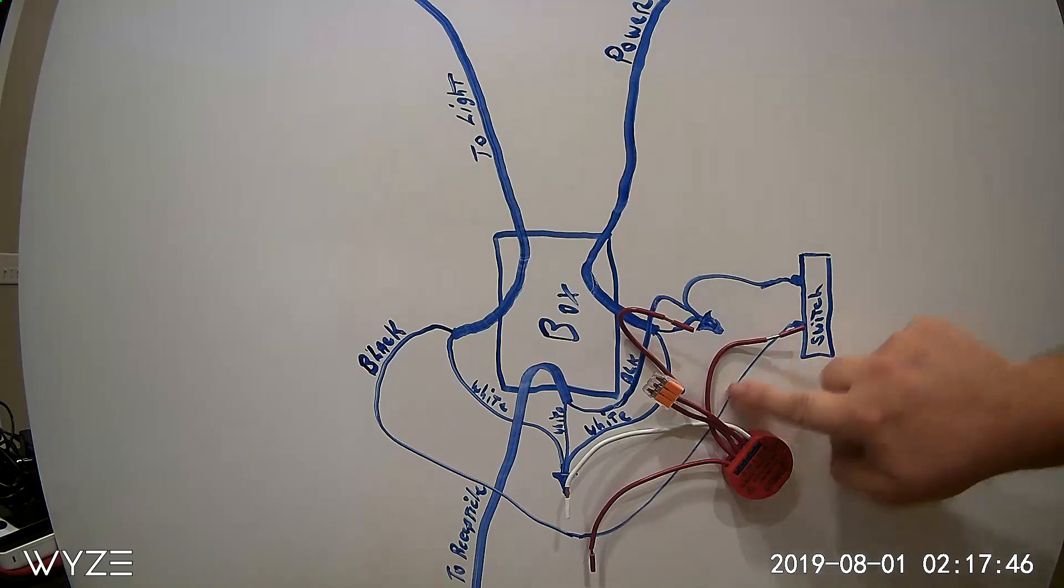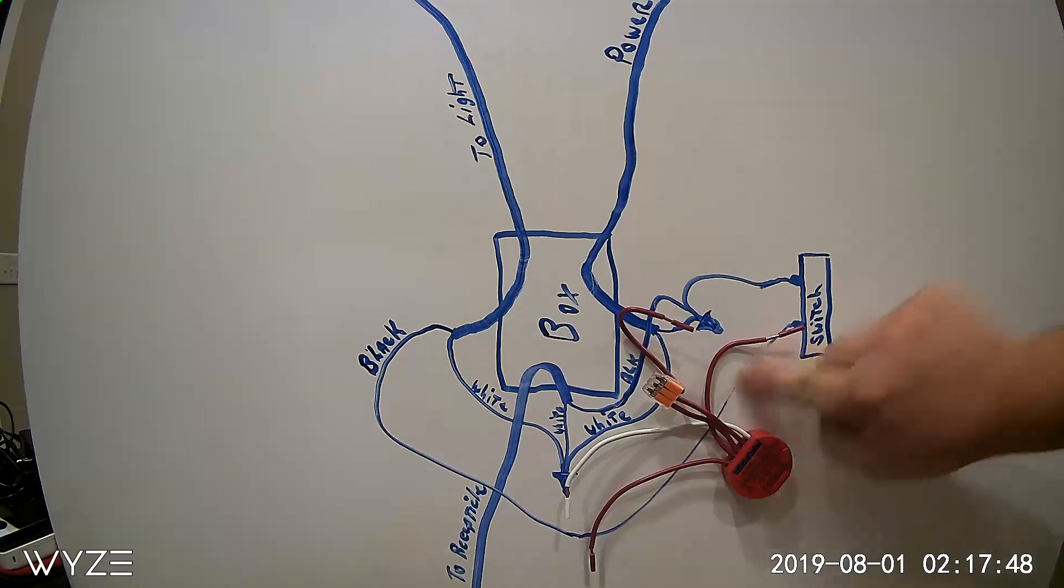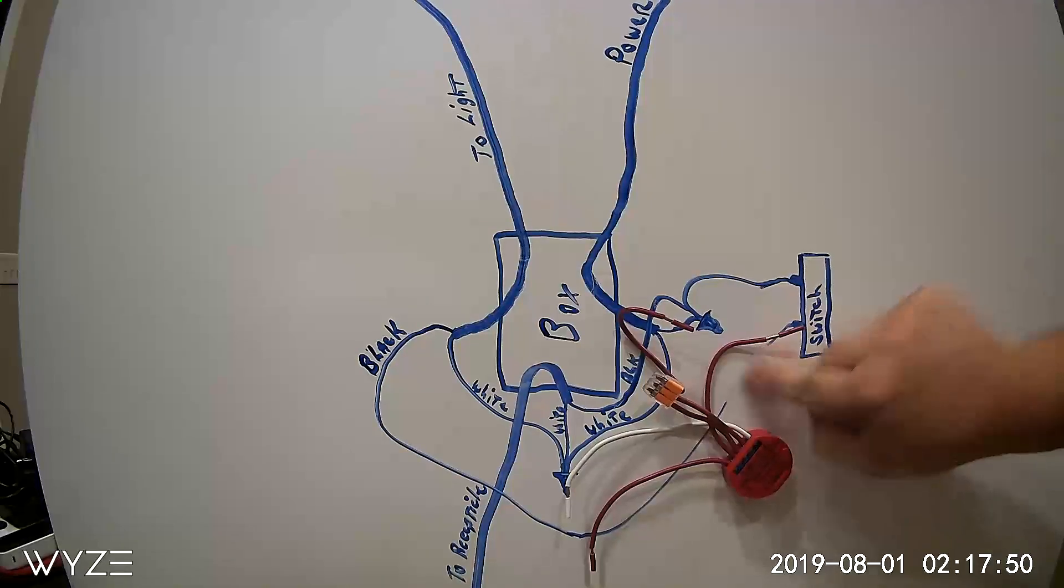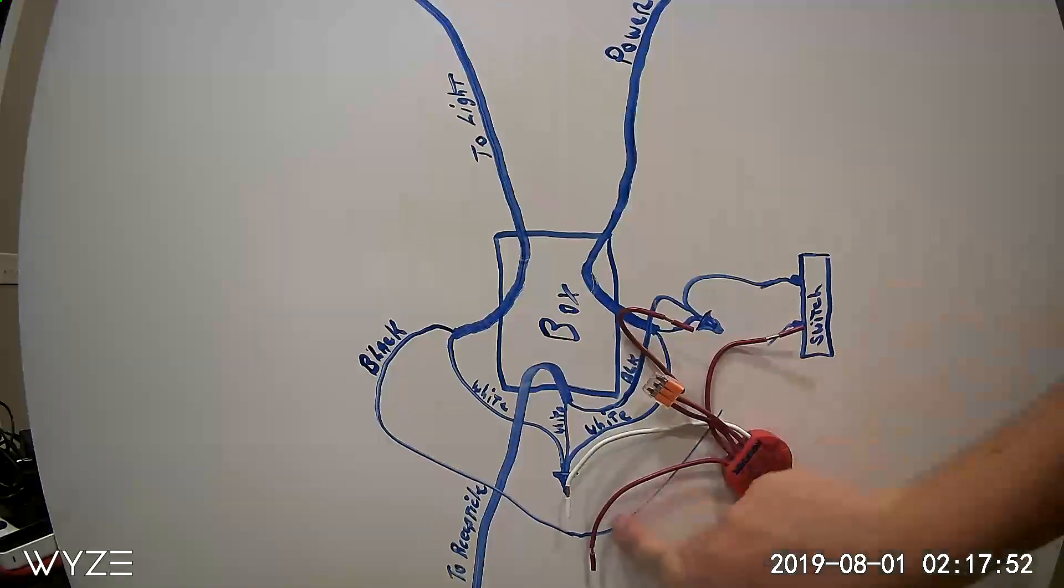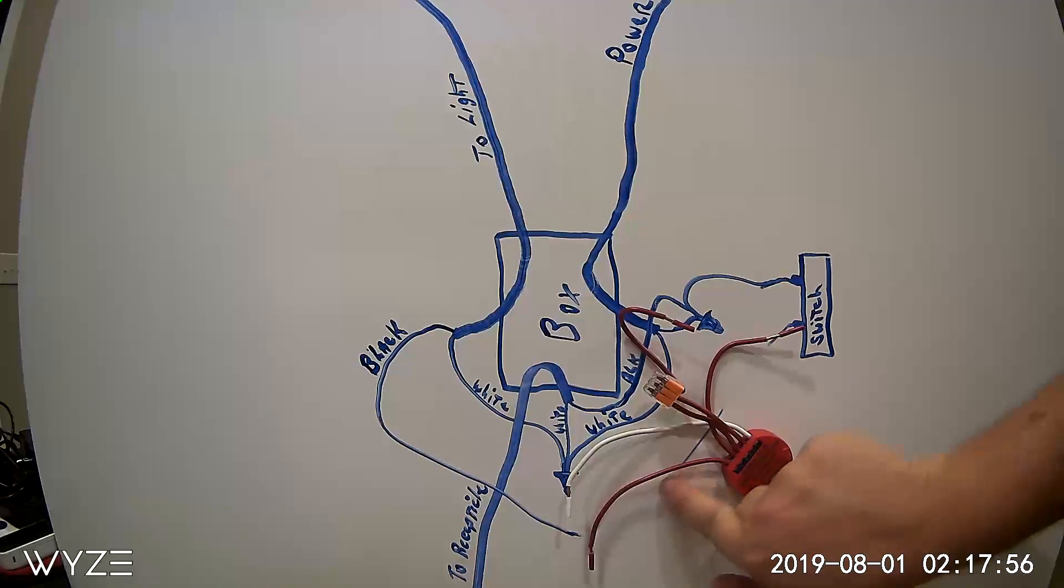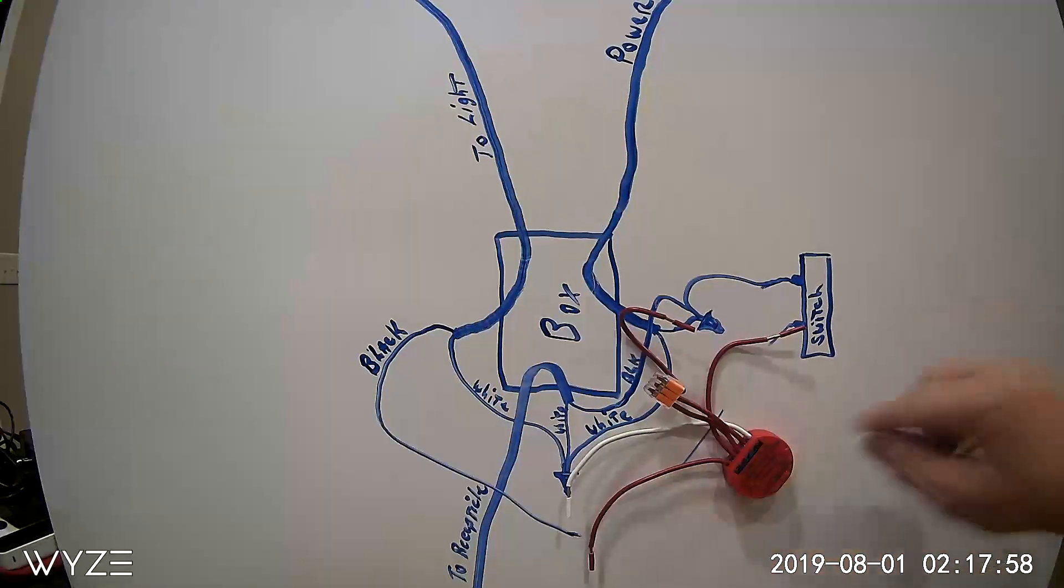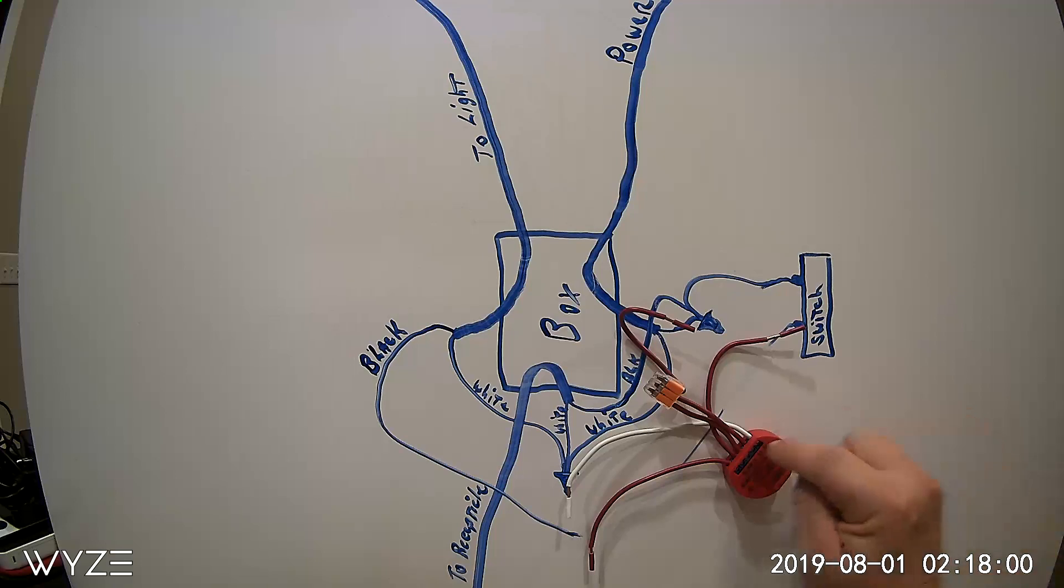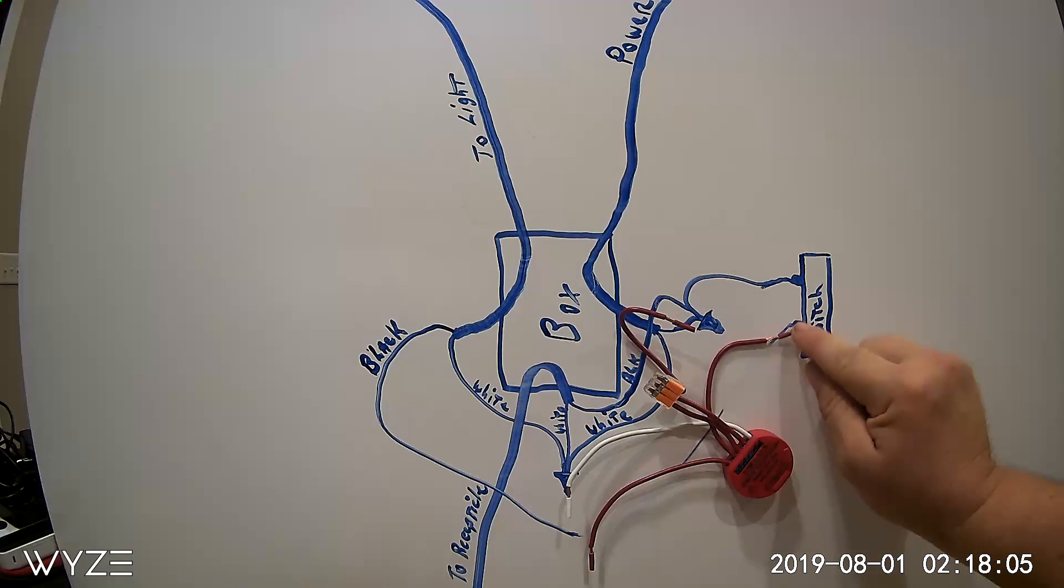So then the next thing we do is we're going to disconnect this wire off the switch, and then we'll connect the SW terminal. We'll connect that wire to the switch.